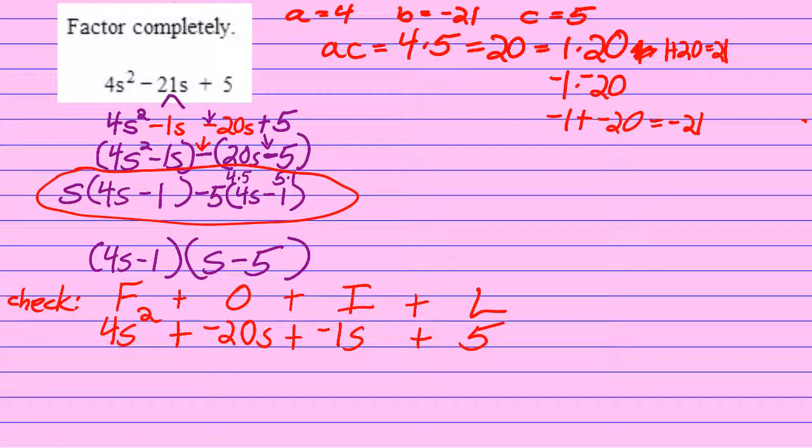The middle terms in this case, and in most cases in this class, are going to be like terms. They're both s terms, s to the first power. So I can add them. Negative 20s plus negative 1s is negative 21s. So I'll have 4s squared plus negative 21s plus 5.